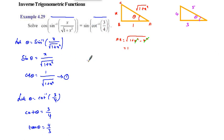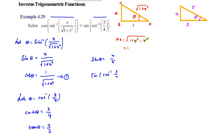Now sin theta equals opposite over hypotenuse, which is 4 by 5. Therefore sin of cot inverse of 3 by 4 equals 4 by 5. This is equation number 2.